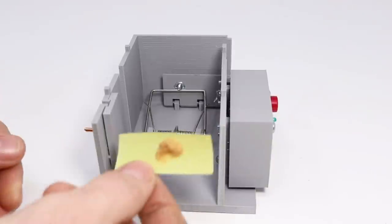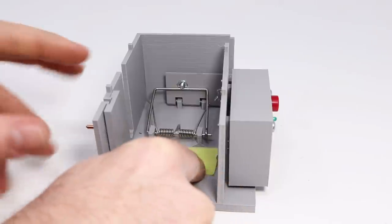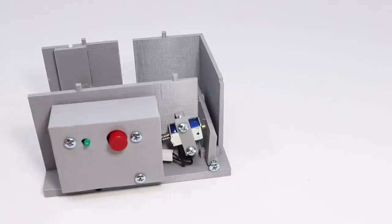For bait, the instructions say take a little peanut butter and put it on a sticky pad. Then put it behind the light beam in front of the spring. Then you can turn on the trap.